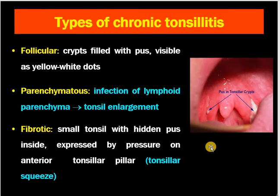Now let's discuss chronic tonsillitis. Chronic follicular tonsillitis: the crypts are filled with pus visible as yellow-white dots. Chronic parenchymatous tonsillitis: infection of lymphoid parenchyma with enlarged tonsils. Chronic fibrotic tonsillitis: the tonsils are small with hidden pus inside, expressed by pressure on the anterior tonsillar pillar — this is called the tonsillar squeeze sign or Irvine Moore sign. If you press on the anterior pillar and pus comes from the tonsillar substance, this signifies chronic infection.